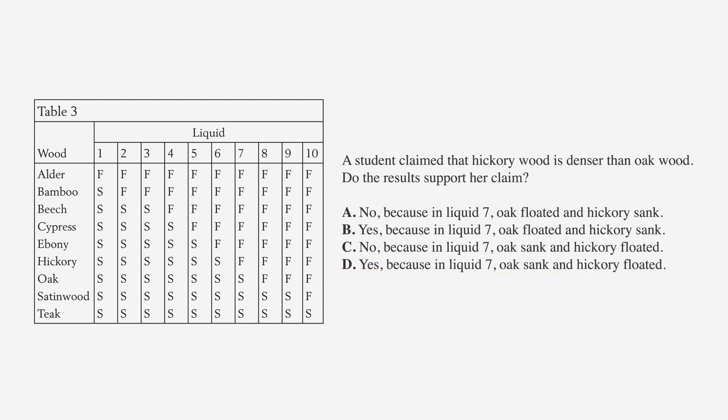Did you notice that the wording in choices A and B are the same except for the yes and no? It's the same for C and D. First, let's look at liquid seven because all four answer choices refer to it. As you can see from the table, hickory floats and oak sinks. So cross out choices A and B because they indicate the opposite of the results shown. That leads us to choices C and D.